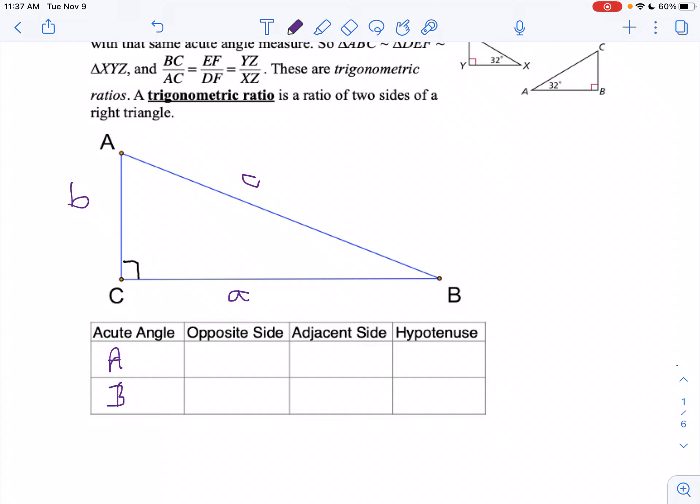Now your hypotenuse is always going to be c. It doesn't matter which angle we're talking about. However, the opposite and adjacent sides, that's going to change. So if I look at angle A, opposite of angle A is side a.